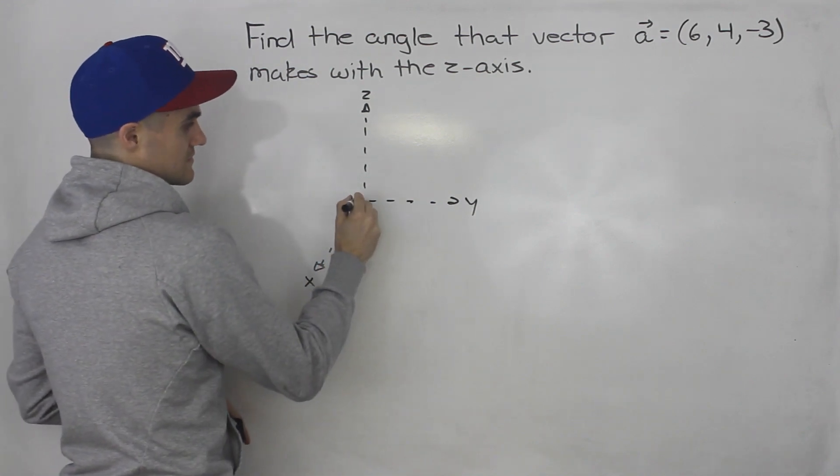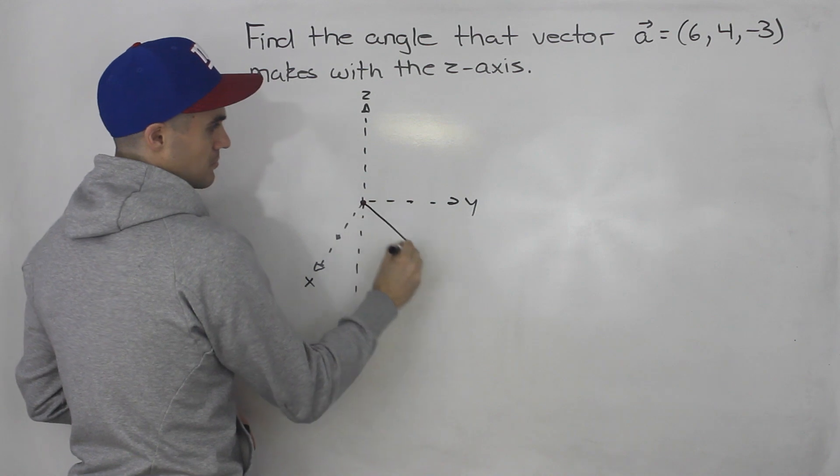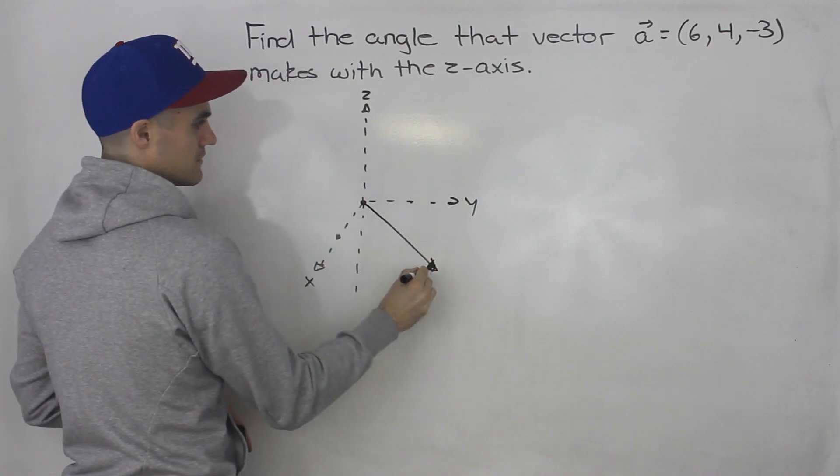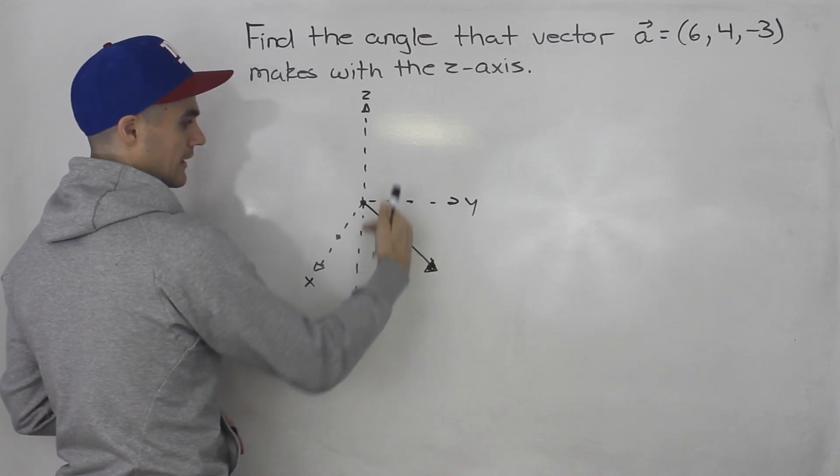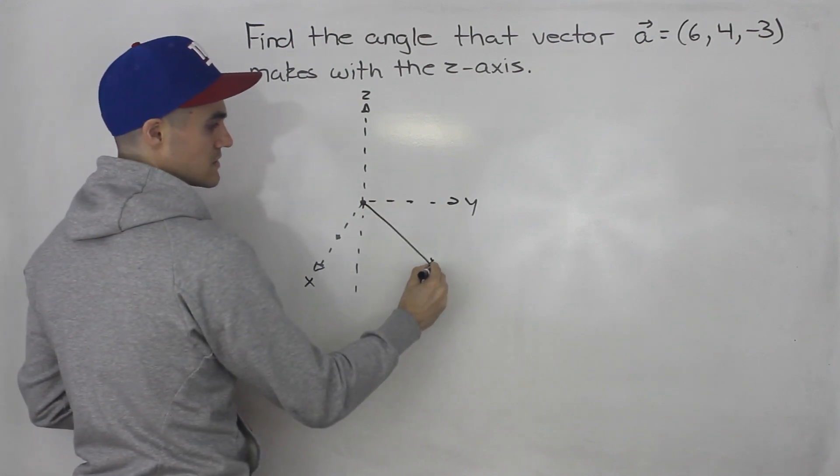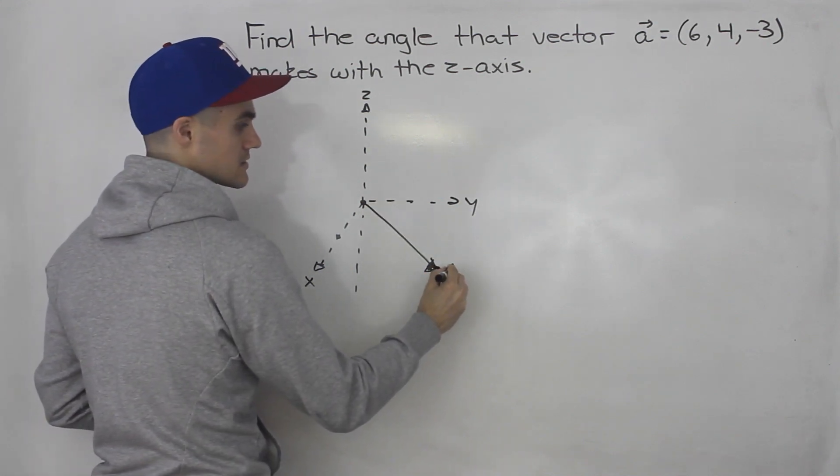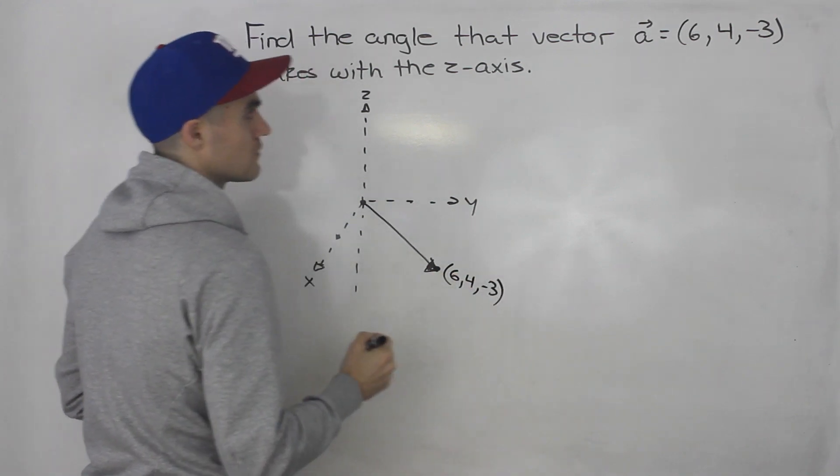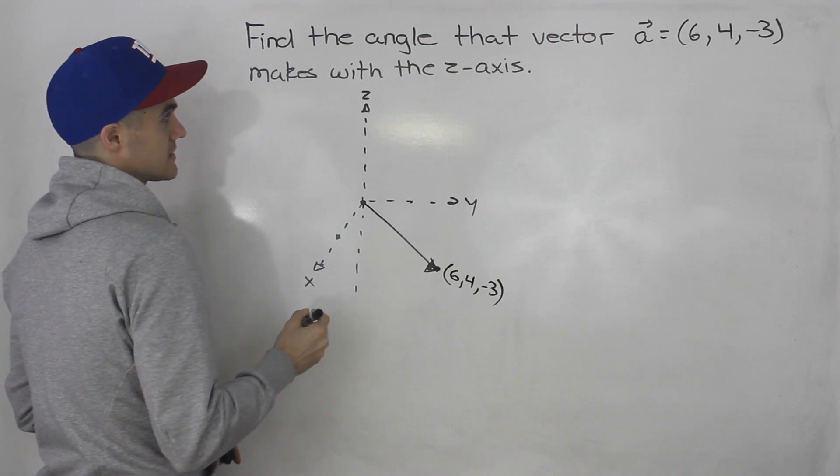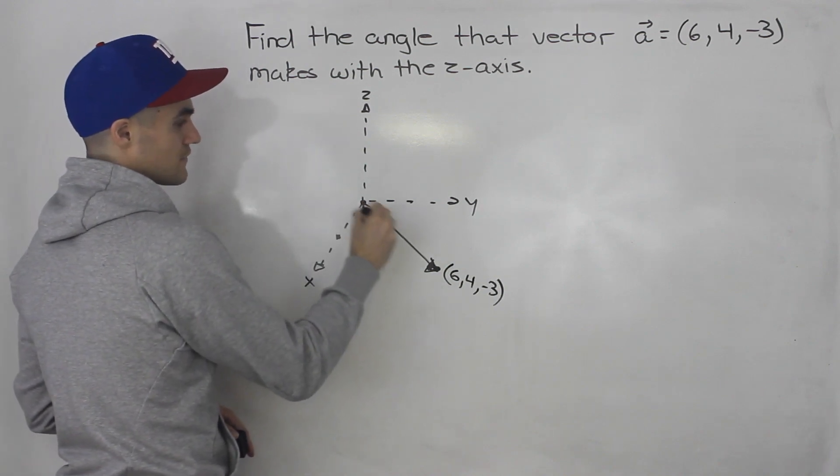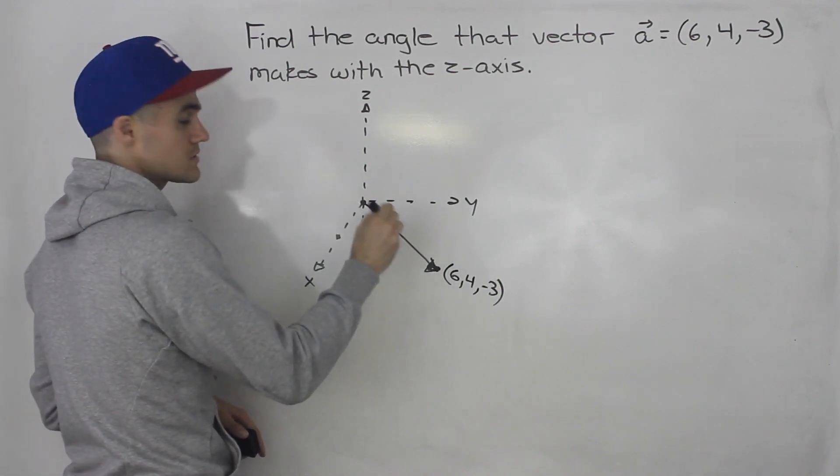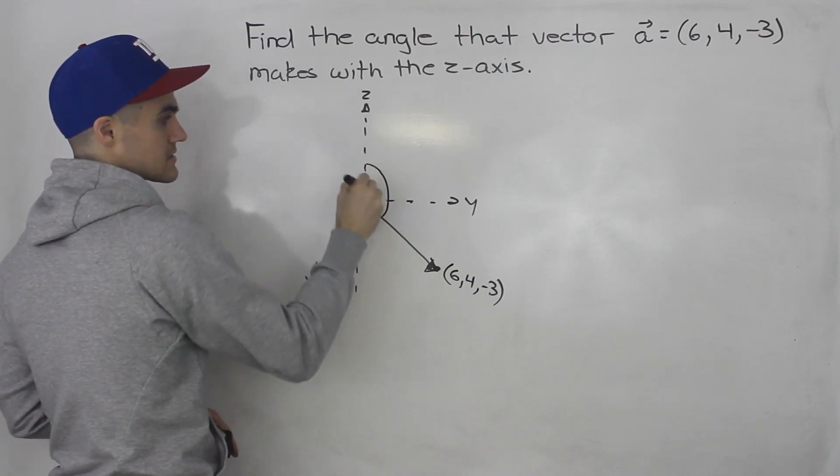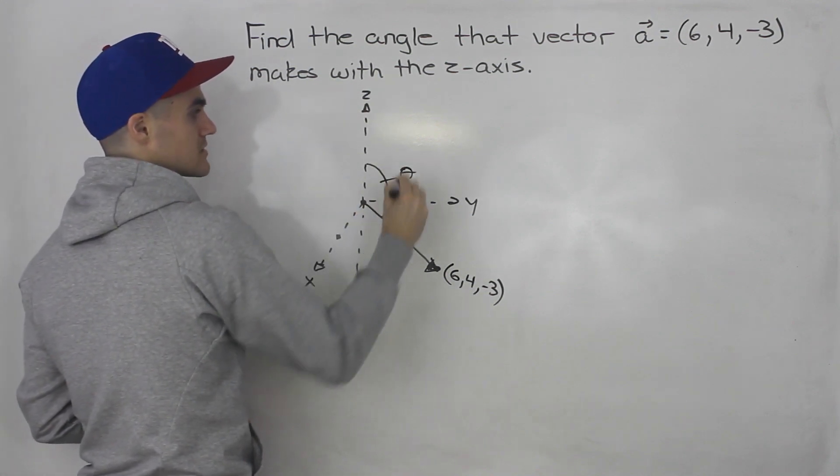So basically this vector is going to be pointing somewhere here, right? Positive x component, positive y component, and a negative z component. So this here is 6, 4, and negative 3. And they're basically asking what's the angle that this vector is pointing downwards makes with the z-axis. So they're solving for let's call this theta here.